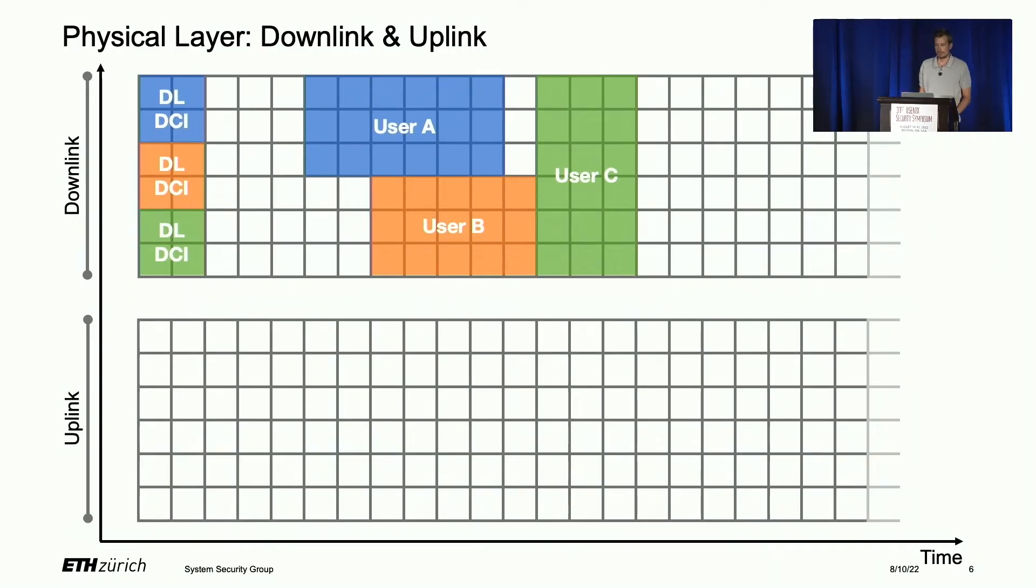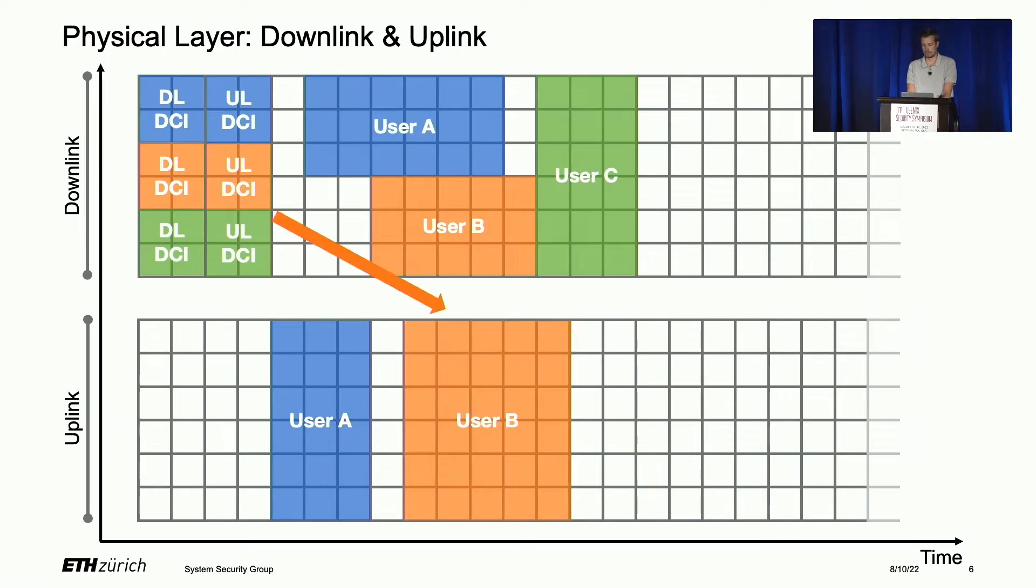What about uplink? Everything in LTE is managed by the base station. A mobile phone cannot just decide to send data on uplink frequencies. It needs to wait for uplink DCIs, which are sent on downlink by the base station, telling users where in the uplink they can send data. These are essentially pointers to the allocations by the base station. In our work, we build a downlink and uplink sniffer, which works by sniffing the DCIs first and then using this information to decode user information on both downlink and uplink.